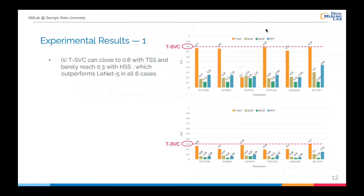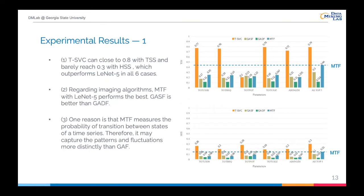Here are the experimental results. First, we can see the SVM-based classifier outperformed the CNN classifier on both TSS and HSS scores. TSVC can achieve 0.8 with TSS and barely reach 0.3 with HSS scores. Regarding imaging algorithms, MTF at image size 5 performs the best, but still has a large gap compared to TSVC. The reason might be that MTF measures the probabilities of transition between states of a time series, and it may capture patterns and fluctuations more distinctly than GAF.